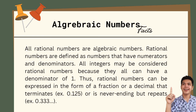Here's another fact about algebraic numbers: all rational numbers are algebraic numbers. Rational numbers are defined as numbers that have numerators and denominators. All integers may be considered rational numbers because they all can have a denominator of one. Thus, rational numbers can be expressed in the form of a fraction, or a decimal that terminates — for example, 0.125 — or is never-ending but repeats — for example, 0.333...